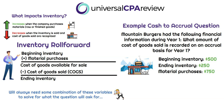Here's an actual example. Mountain Burgers had the following financial information during year one. What amount of cost of goods sold is recorded on an accrual basis? Beginning inventory was $500, ending inventory was $250, and material purchases were $750. Plugging into the roll forward: beginning inventory $500 plus purchases $750 gives cost of goods available for sale of $1,250. Since ending inventory is $250, cost of goods sold must be $1,000. That's the answer — $1,000 cost of goods sold on an accrual basis.